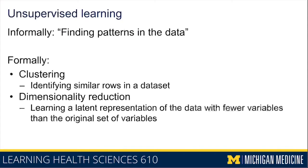When people talk about unsupervised learning, they'll sometimes say informally that they want to find patterns in the data. What they're typically talking about is that they want to either perform clustering or reduce the dimensionality of the data. They typically don't have any kind of outcome in mind that they want to predict — they may just have a series of variables and want to see how those variables and cases are interrelated. One common unsupervised learning objective is clustering, where the goal is to identify similar rows in a dataset.